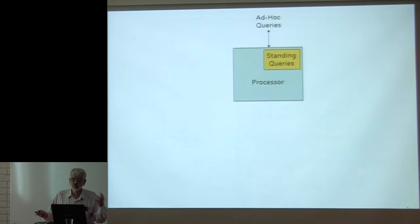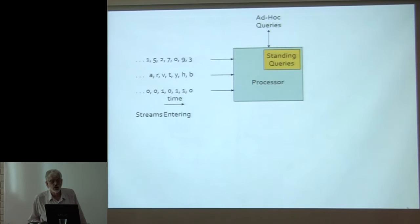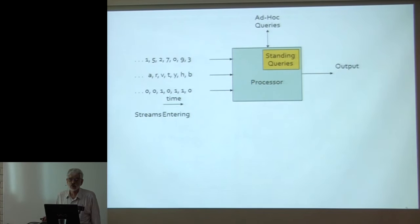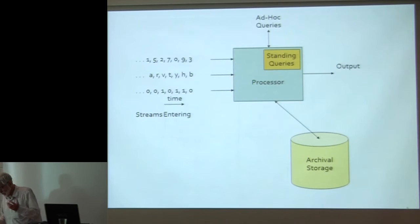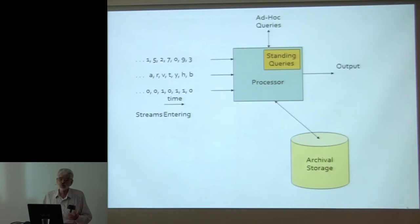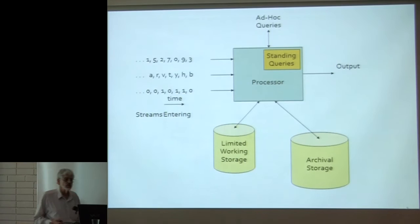The system has to spit out the answer every time there is a new maximum value. You keep the maximum value, and if the new value is bigger than the previous maximum, you not only change the maximum but output the new value. So you have a query management system that stores standing queries and can accept and answer ad hoc queries. There are many streams entering, it makes outputs occasionally in response to ad hoc or standing queries, there's archival storage large enough to store everything, and some limited working storage — preferably main memory.